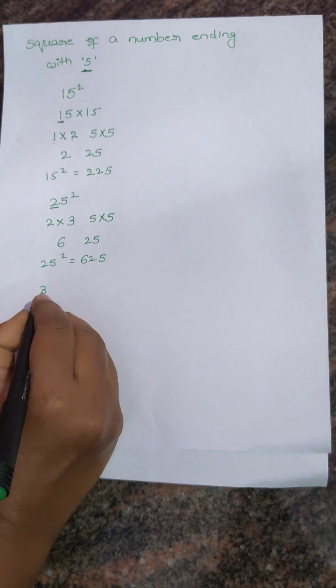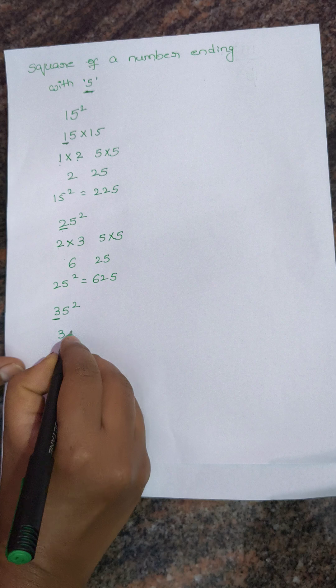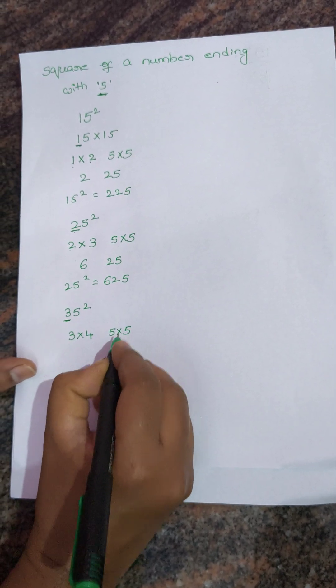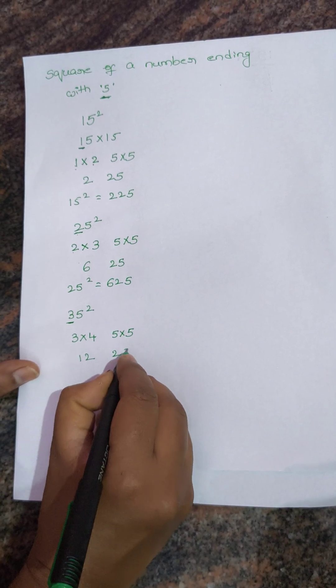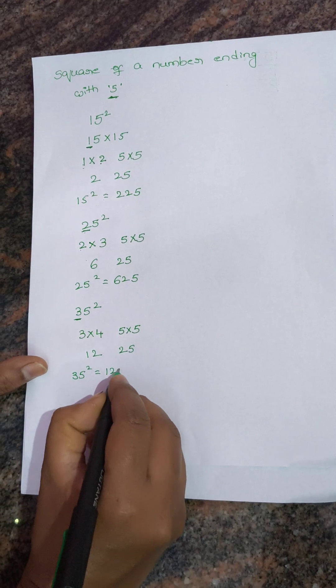Next, 35 square. What is the next value of 3? 4. We have to multiply 3 with 4 and 5 into 5. 3 times 4 is 12. 5 times 5 is 25. 35 square equals 1225.